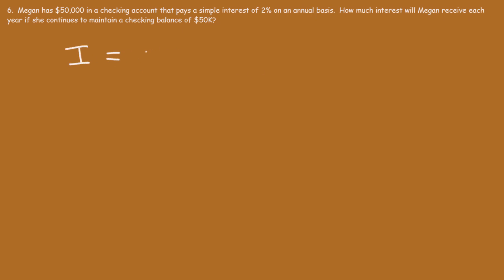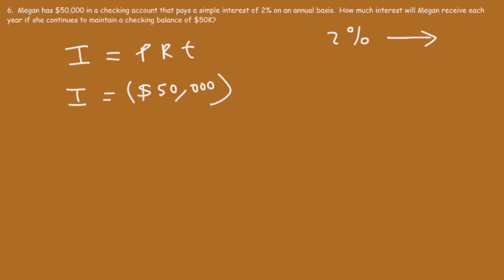The simple interest formula is I = PRT. I is the simple interest credited to the account annually. P is the principal, which is $50,000. R is the interest rate — to convert 2% to a decimal, divide by 100 or move the decimal two units to the left, giving 0.02. We want to calculate the simple interest per year, so T equals 1 year.